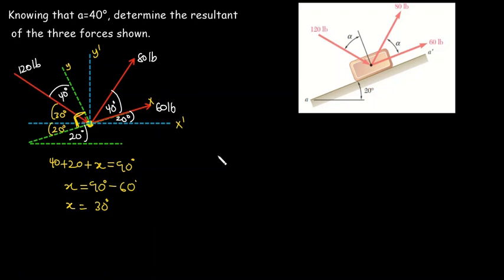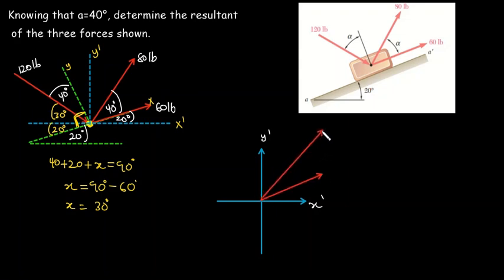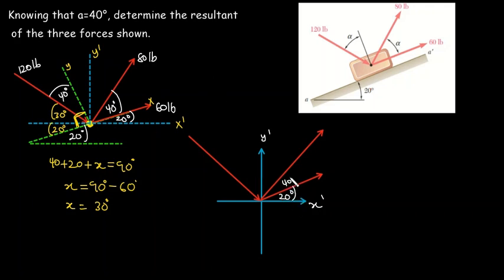Let's draw our new plane with x prime and y prime axes. I'm going to redraw the forces: we have the 60-pound force, the 80-pound force, and the 120-pound force. This angle here is 20 degrees and this angle here is 40 degrees. Now we can use this system to find the components of all the forces.